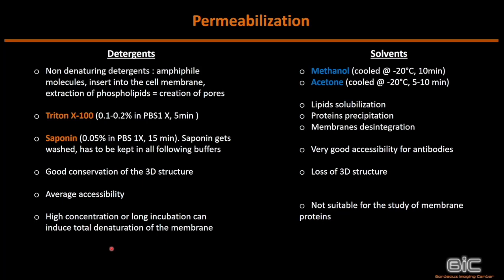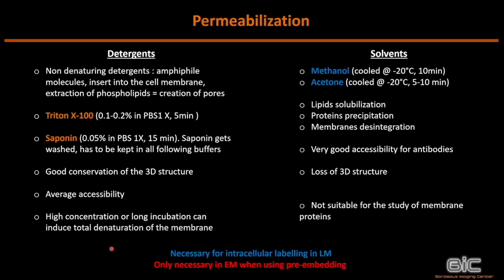We can also use solvents for permeabilization, like methanol or acetone. They induce lipid solubilization, protein precipitation, and membrane disintegration, but give very good antibody accessibility — at the cost of total loss of 3D structure. This is not suitable for the study of membrane proteins because membranes are completely altered. Permeabilization is absolutely necessary for intracellular labeling in light microscopy, and in electron microscopy it will only be necessary when doing pre-embedding immunolabeling.